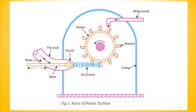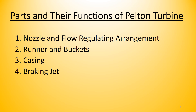This schematic diagram of a Pelton turbine shows all the parts and explains the working. It has a penstock, a spear, and at the end of the spear there is a nozzle from which a jet of water is ejected. Buckets or vanes are placed inside the runner, arranged around the circumference of the runner. There is also a brake nozzle. All these are enclosed inside a casing. The four main parts are: nozzle and flow regulating arrangement, runner and buckets, casing, and braking jet.